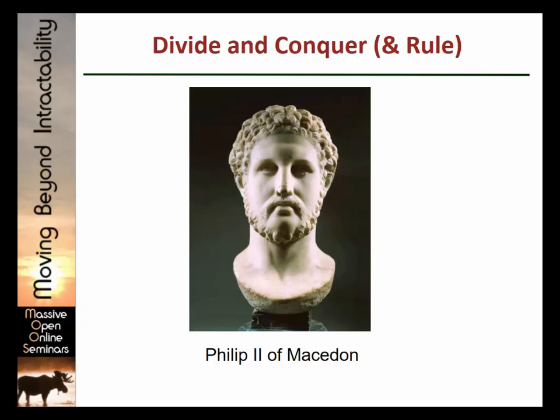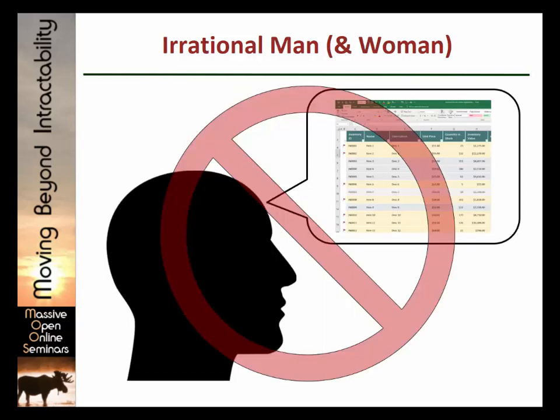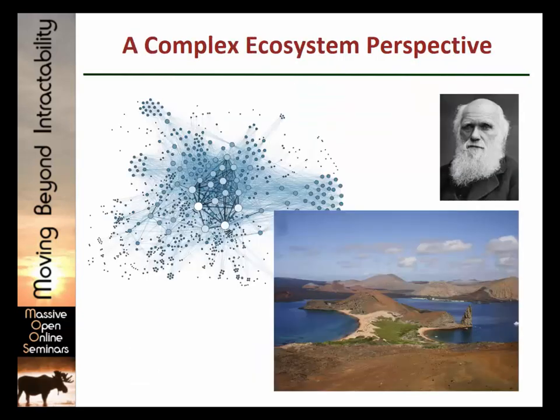But another part of the reason that this rational ideal model doesn't really stand up in the real world is that men and women are, in a very real sense of the word, irrational and don't follow this model. You could say, well, if they could just be rational, everything would be fine. But there's more to it than that. We've been trying to look at this throughout this seminar series by thinking about the social system as a complex ecosystem, and it applies here.